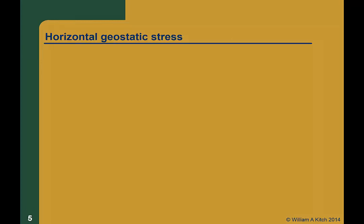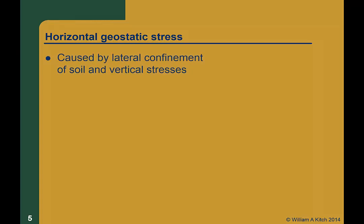While calculating vertical geostatic stress is simple, determining horizontal geostatic stress is not — it's much more complicated. Fundamentally, horizontal geostatic stress is caused by the lateral confinement of soil and the vertical load. In uniaxial loading, such as when we test a concrete cylinder, the sample is free to strain in the lateral direction and there are no lateral stresses. However, soil extends infinitely in all directions and is confined laterally, so any vertical load will generate a lateral load due to confinement and Poisson's effect.